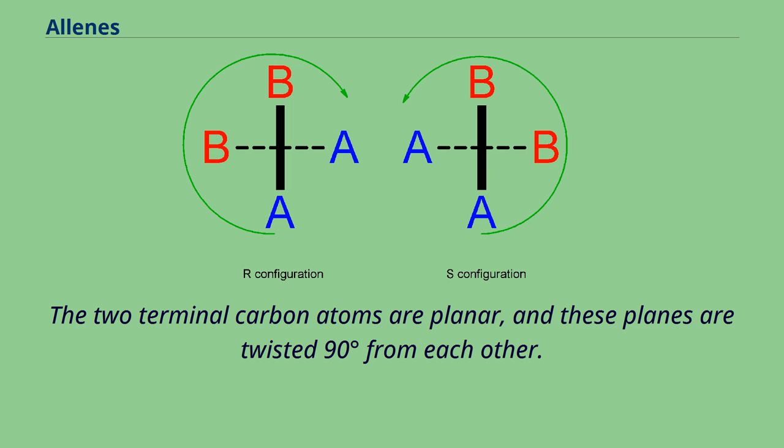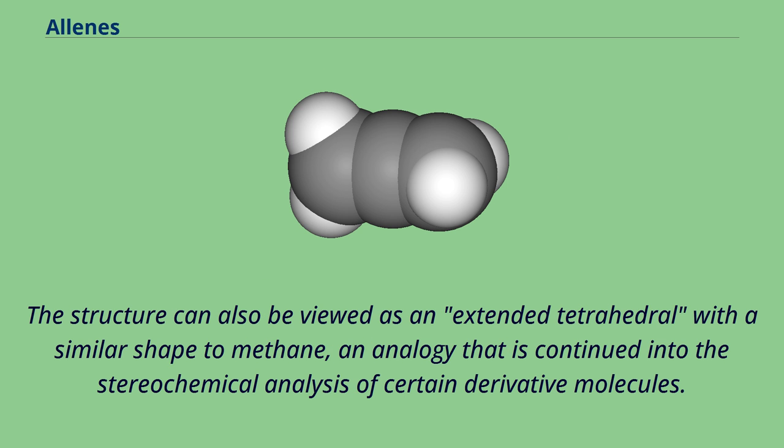The two terminal carbon atoms are planar, and these planes are twisted 90 degrees from each other. The structure can also be viewed as an extended tetrahedral with a similar shape to methane.